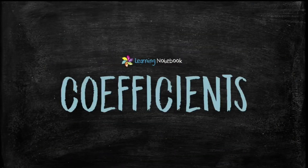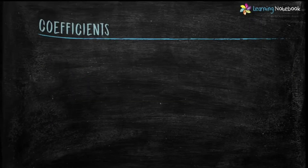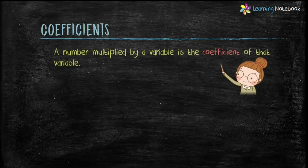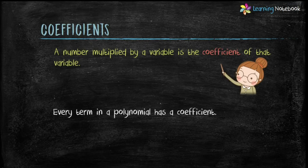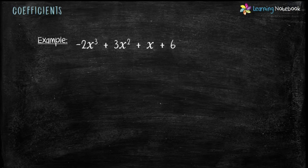Let's start and first understand what are coefficients. A number multiplied by a variable is the coefficient of that variable. Every term in a polynomial has a coefficient. Let's understand it with the help of an example. Given polynomial is minus 2x cubed plus 3x squared plus x plus 6.